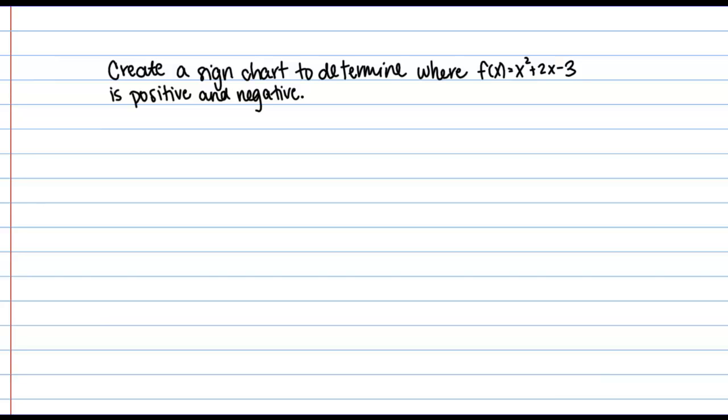One of the most common ways to determine this information, that is where a function is positive or negative, is by use of what we'll call a sign chart. So in this video, we're going to create a sign chart to determine where f(x) = x² + 2x - 3 is positive and where it's negative.